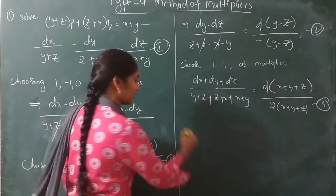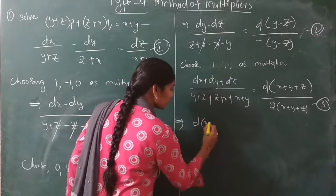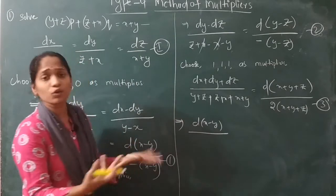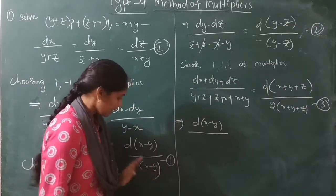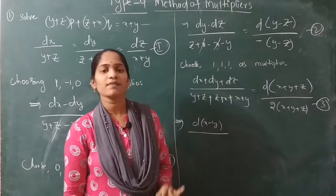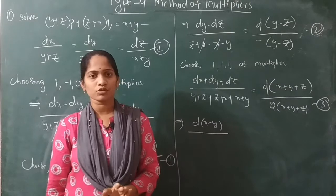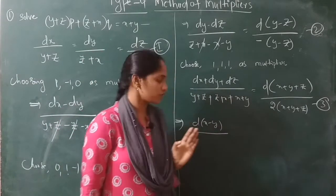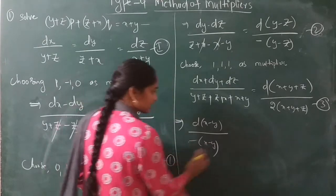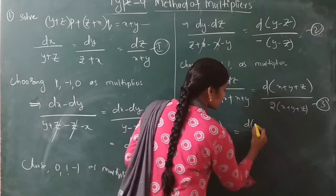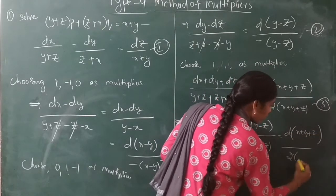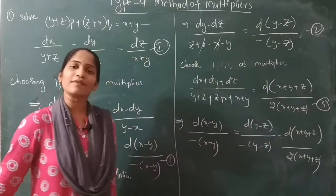So now we have three equations. By equating equation 1 and equation 2, or equation 1 and equation 3, or equation 2 and equation 3, we can take any two equations. Each equating gives an independent solution C1 or C2. I will equate equation 1 and equation 2.